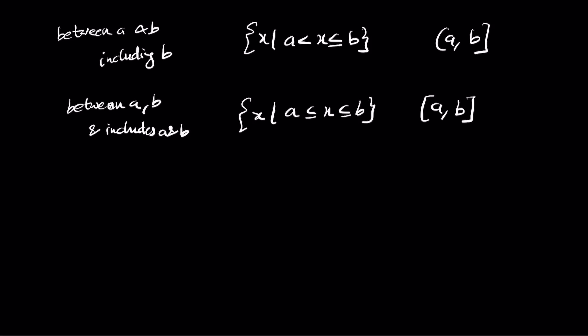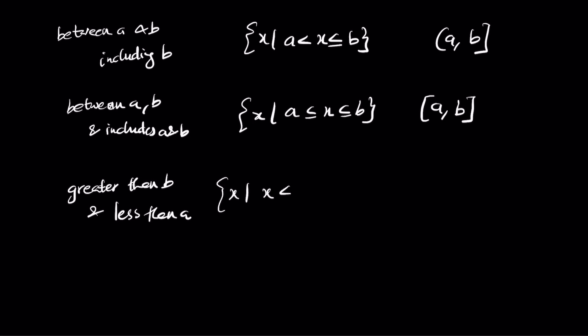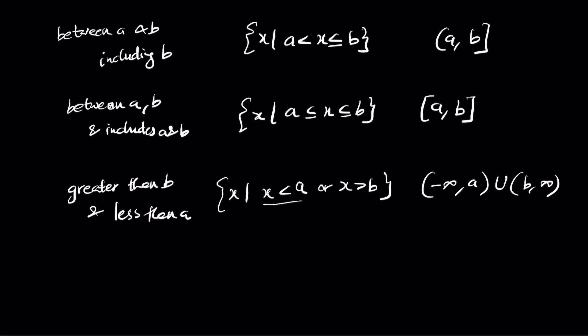If you have values greater than b and less than a, you write x such that x less than a or x greater than b. The 'or' here represents the combination of both. In interval notation, write each separately: negative infinity comma a and b comma infinity, with a union symbol in the middle. Union represents the set of both of them.